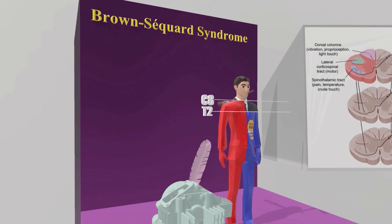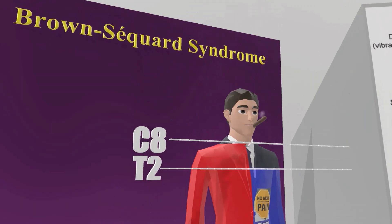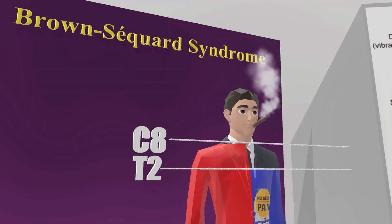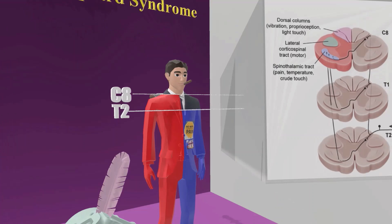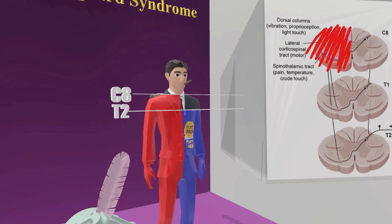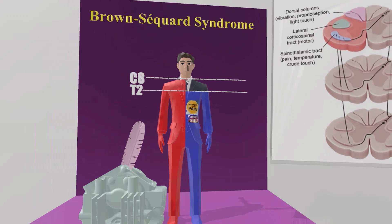In this scene we're talking about Brown-Séquard syndrome, represented by this guy over here who was smoking a brown cigar — brown cigar for Brown-Séquard. In this scene, this guy unfortunately got stabbed in the back, causing hemi-section of the spinal cord at the level of C8. This is what Brown-Séquard syndrome is: hemi-section of the spinal cord.